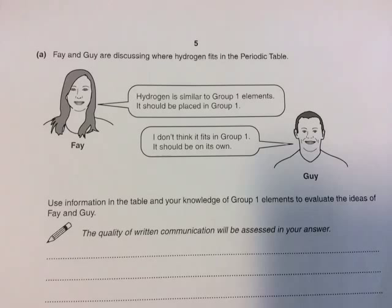Group 1 are all solid metals. They're very reactive. They all have one electron in their outer shell, and they lose that electron when they react to form a 1 plus ion. They're very reactive with water. They form compounds with non-metals, for example, salt — sodium chloride. And they don't react with other metals.